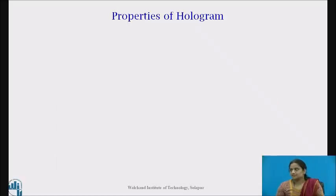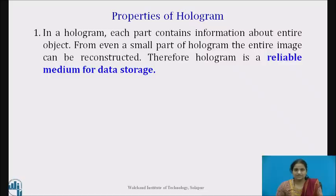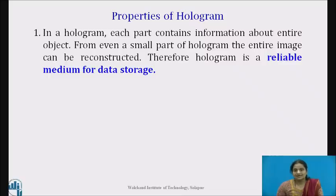Let us come to the properties of hologram. In an ordinary photograph, each region contains a separate and individual part of the original object. Therefore, destruction of a portion of a photographic image leads to an irreparable loss of information corresponding to the destroyed part. On the other hand, in a hologram, each part contains information about the entire object. From even a small part of the hologram, the entire image can be reconstructed. Therefore, a hologram is a reliable medium for data storage.